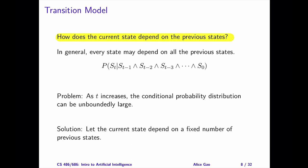We're reasoning about events over time. There's one state for every time step. In general, the current state may depend on all the past states. Mathematically, we can express this as a conditional probability distribution, a probability of S sub t given S sub 0 up to S sub t minus 1.